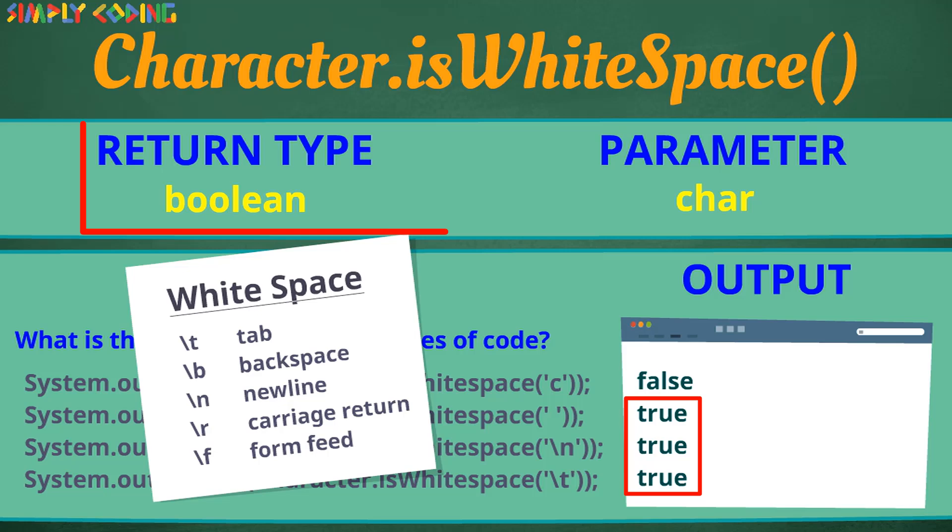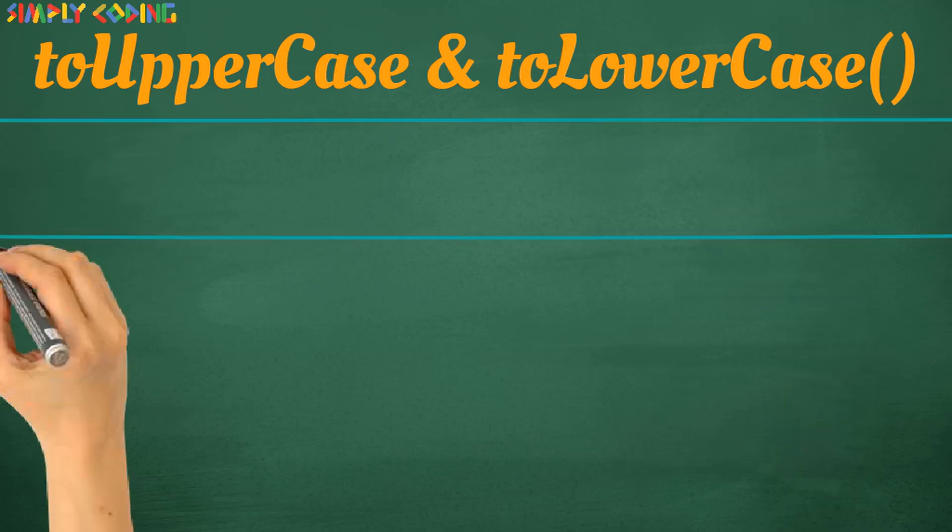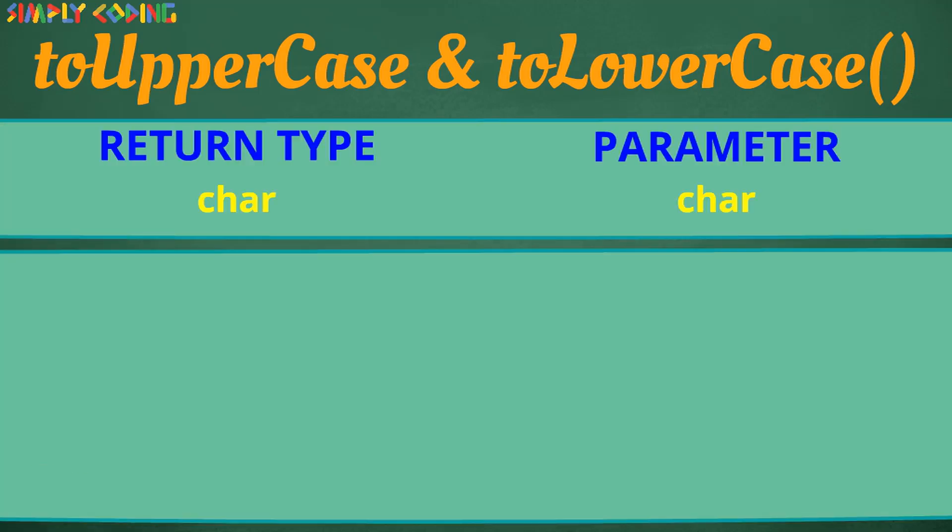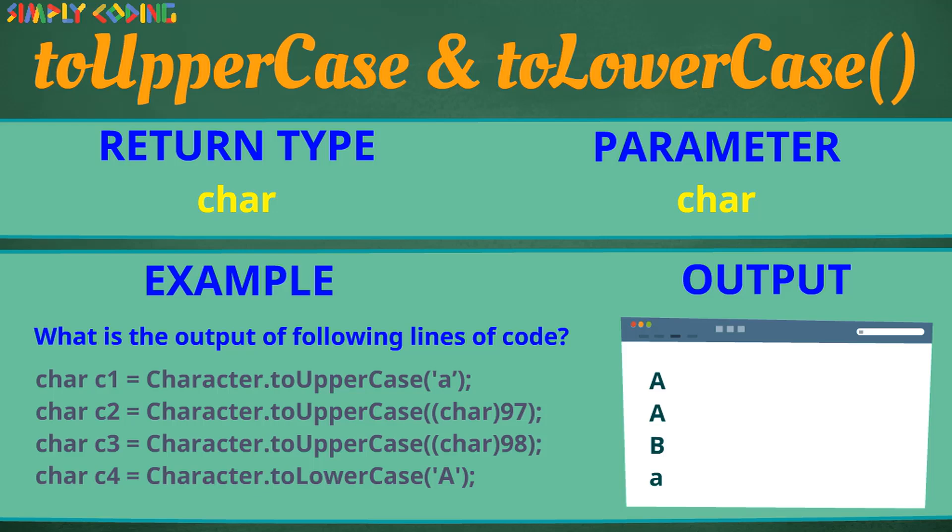Now all of the methods we saw till now took in char and returned a boolean value. Now we will see toUppercase and toLowercase methods. It converts the case of the character passed. Here also you can be given a question where ASCII values are being typecasted. Here you have to correctly identify what character the value stands for and then convert the case and give the answer.